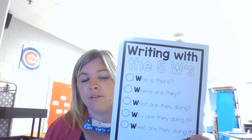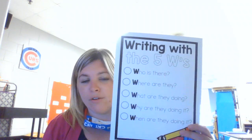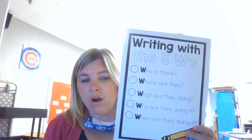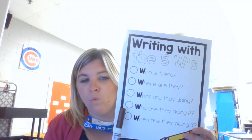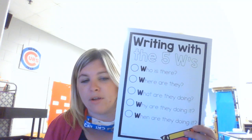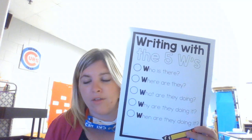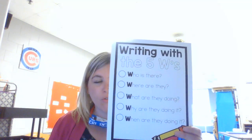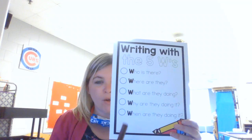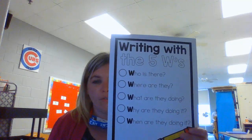Maybe we're going to ask: Who is there? Where are they? What are they doing? Why are they doing it? When are they doing it? Those are our Five W's — our poster that we can reference when we are writing.